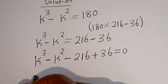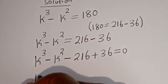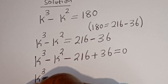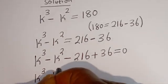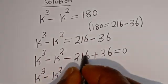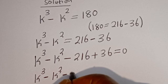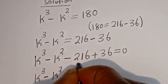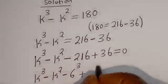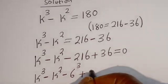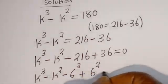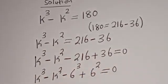Now here we have k to the power of 3 minus k squared, and note that 216 is 6 to the power of 3, and 36 is 6 squared. So the equation becomes k³ minus k² minus 6³ plus 6² is equal to 0.